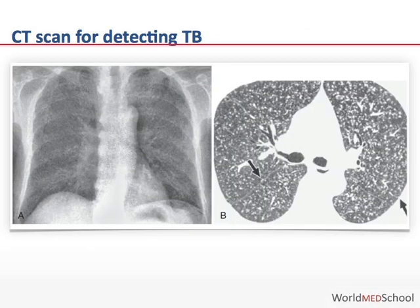Where advanced imaging is available, for example, a CT scan can be a good way to diagnose disseminated or miliary tuberculosis. Unfortunately, TB occurs in settings where resources usually are limited and advanced technology is not available.